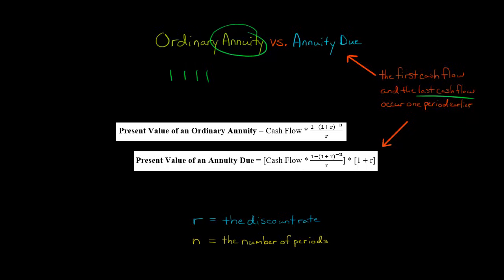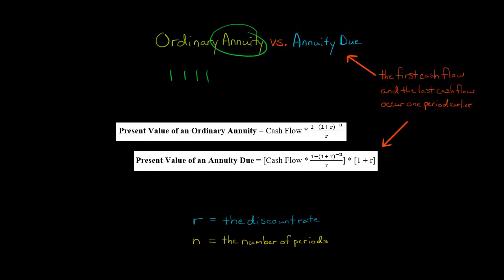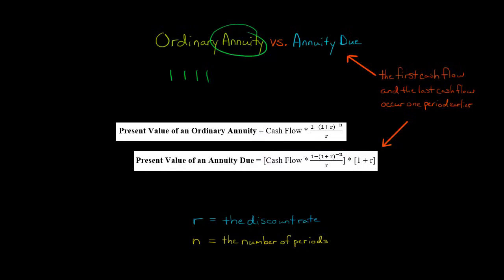I want to show you the formula for present value of an ordinary annuity versus present value of an annuity due, to show you how similar they are. The present value of an annuity due is the exact same formula as the ordinary annuity, except we add a multiplication by one plus the discount rate at the end.